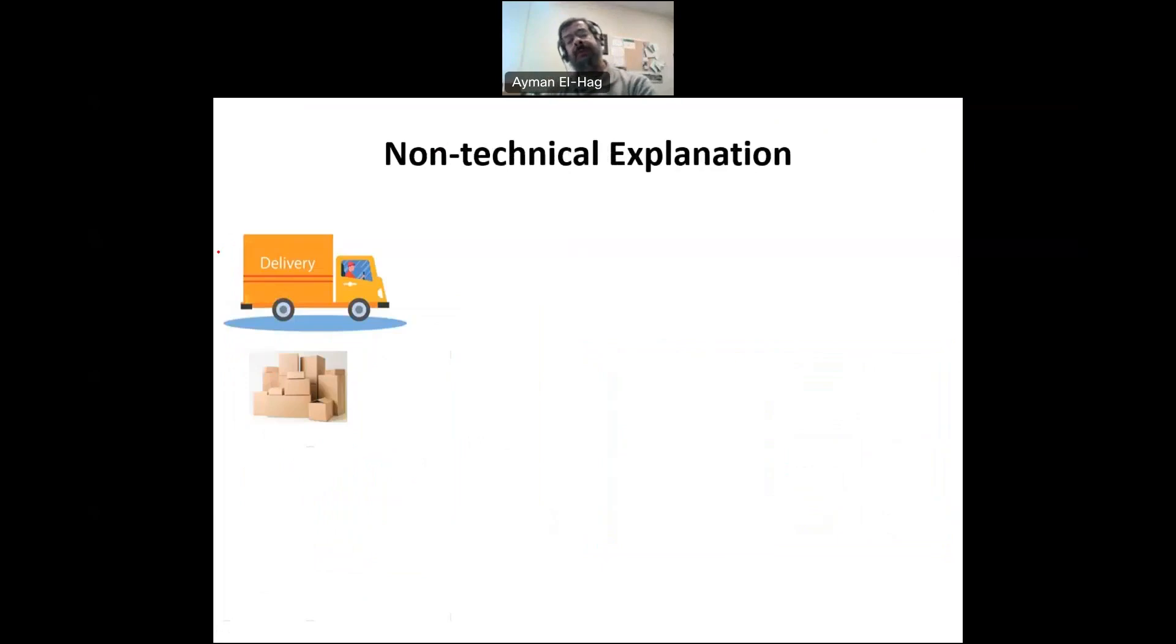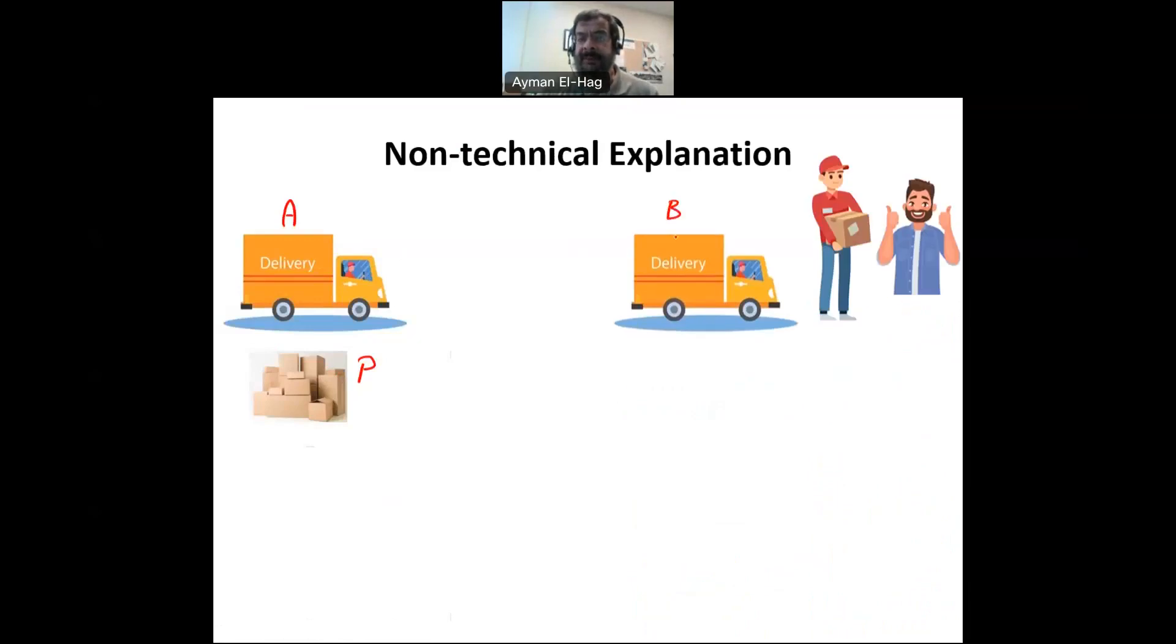Let's assume that there is a delivery guy that you want to deliver certain product. So the delivery guy is at point A, at the transmission point, and whatever you want to deliver is in the car. This is your real power that you want to deliver. So this is your P that you want to take with you. So the guy goes from point A to point B and delivers this product to the customer. The customer is happy.